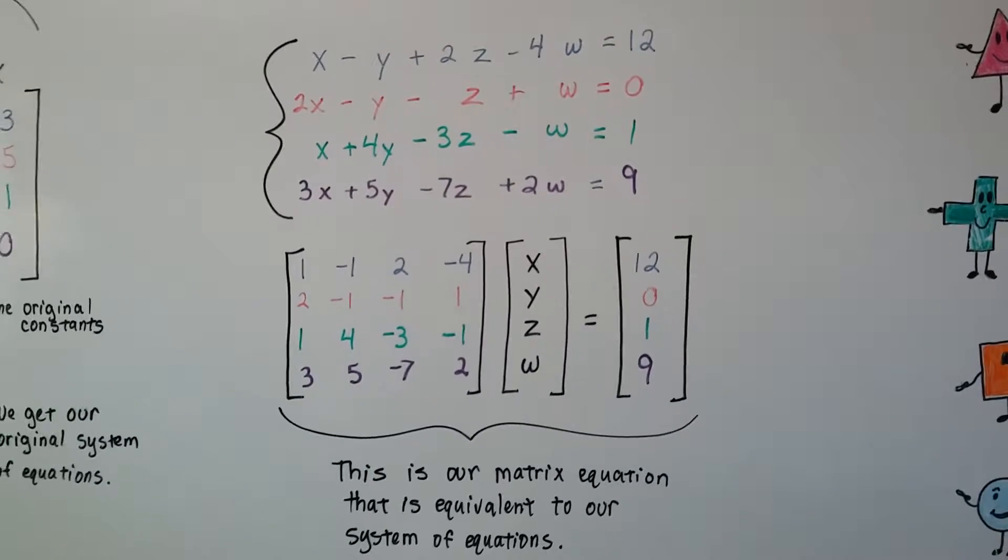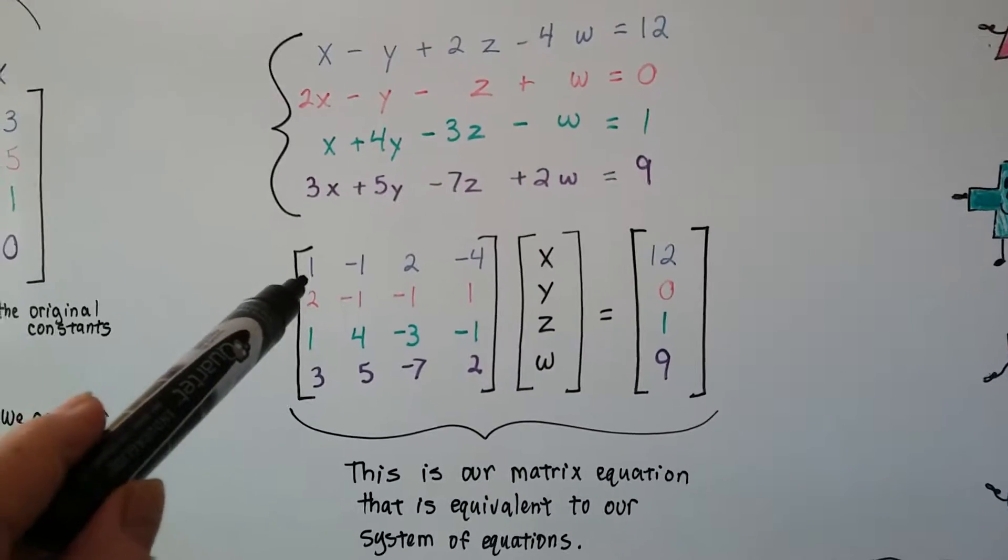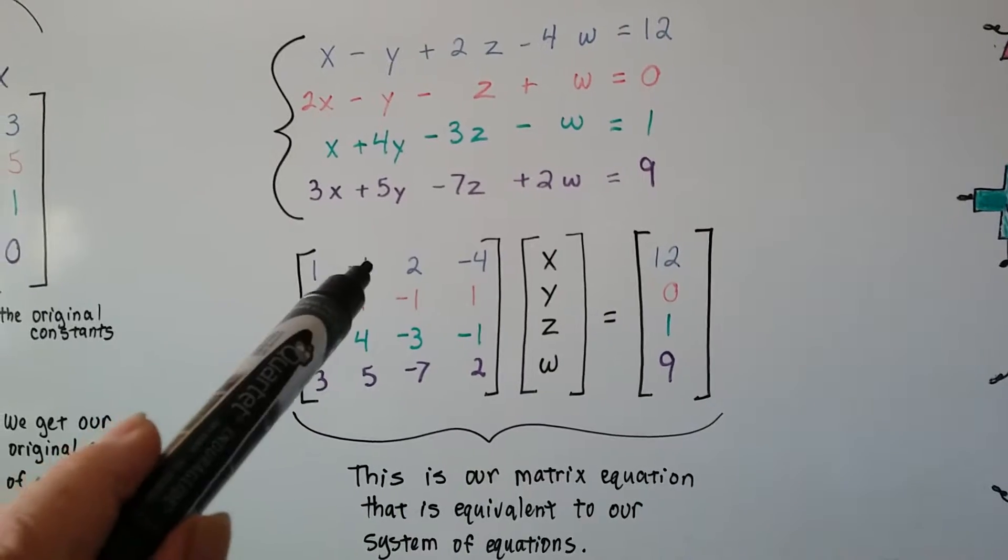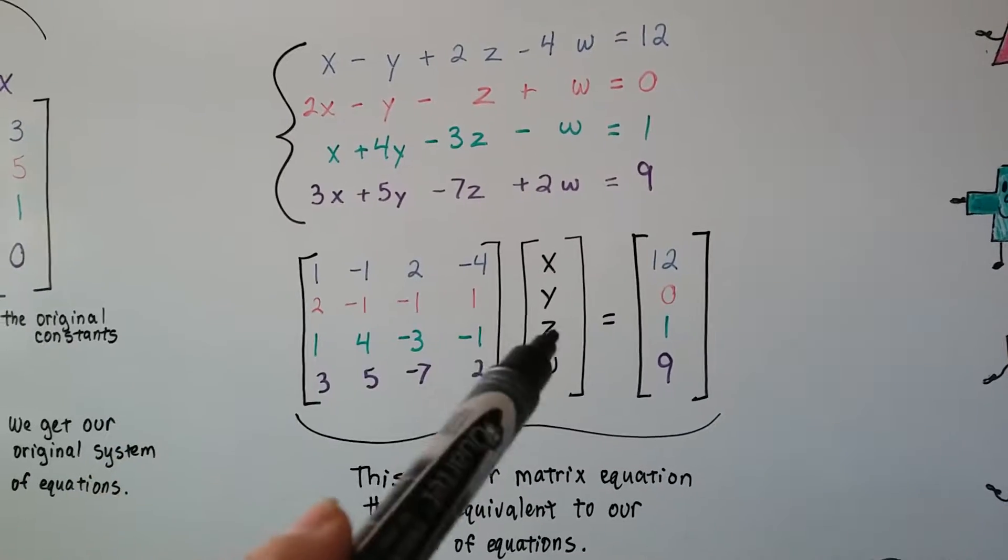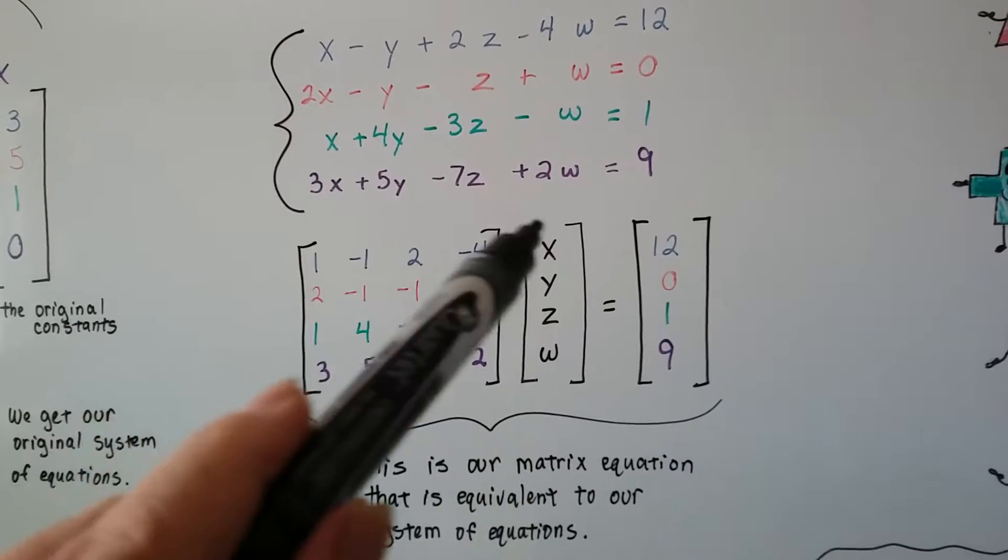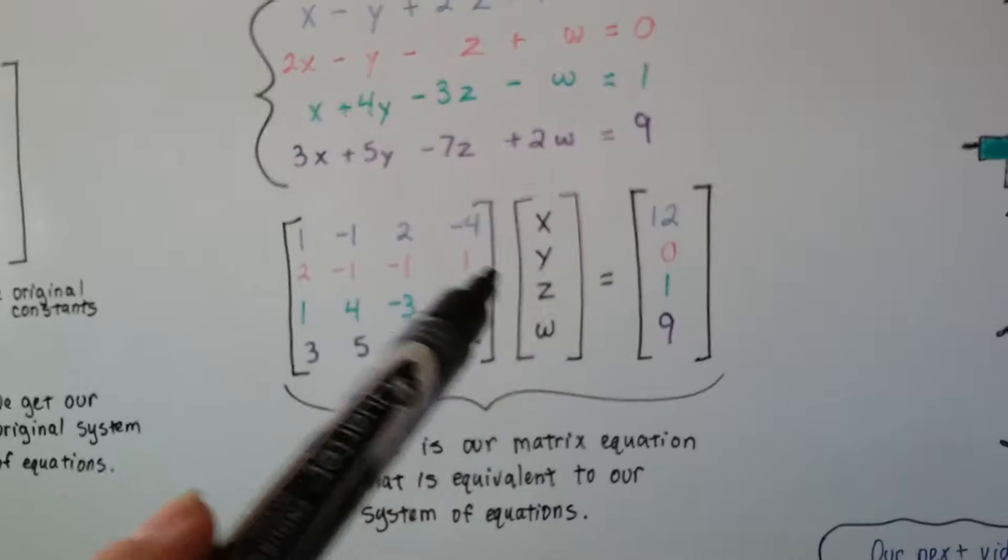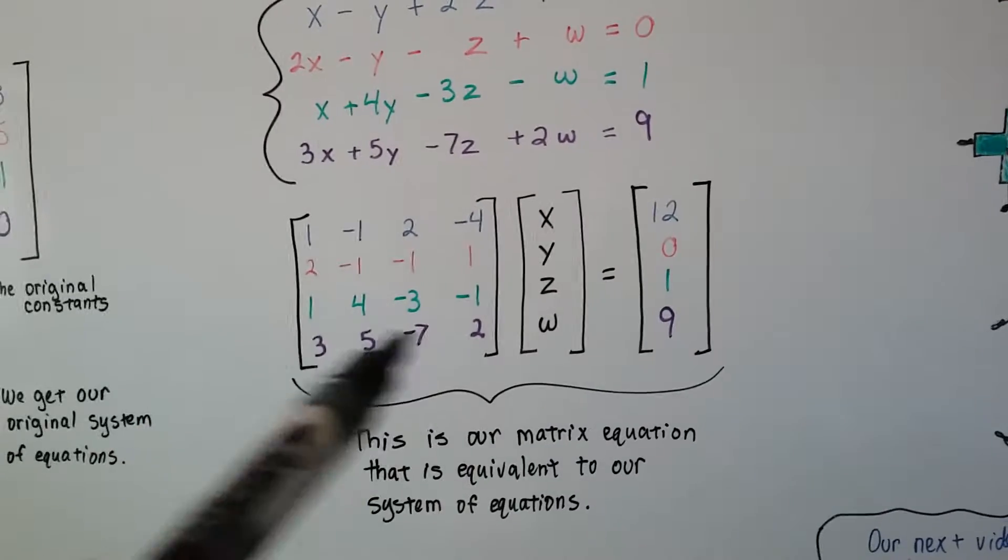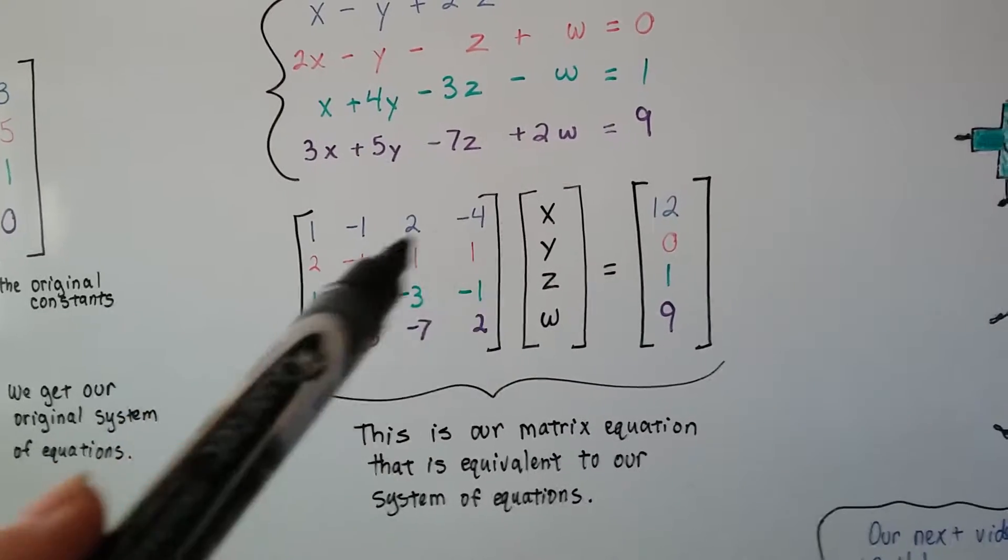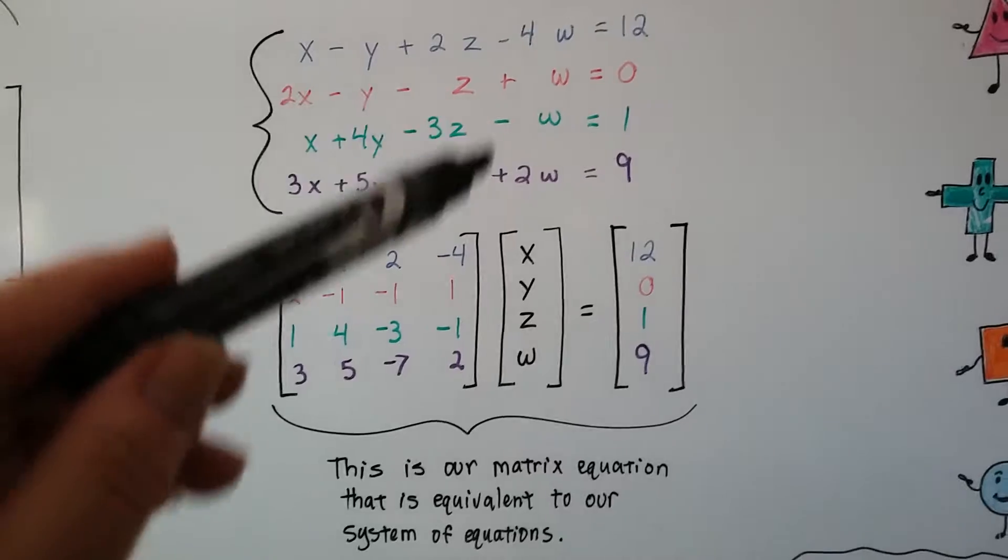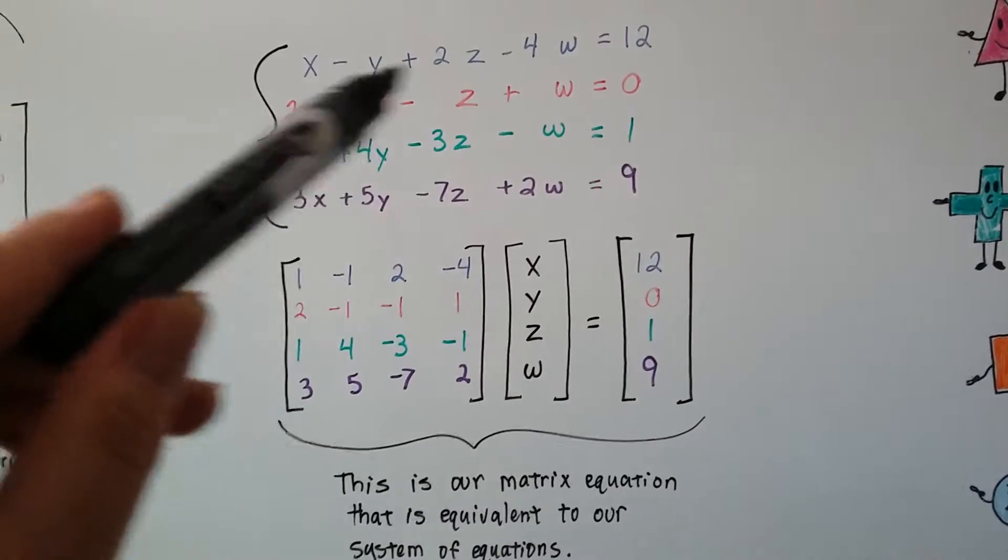We multiply each element going like that. The first one to the first variable, the second one to the second variable, the third one to the third one, fourth one to the fourth one, then we go back to the first one to the x, second one to the y, and all we're doing is putting it back into this.